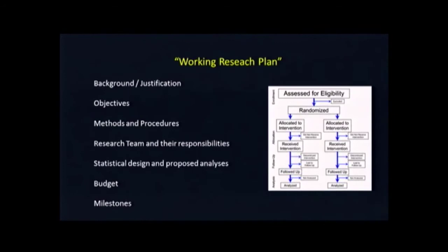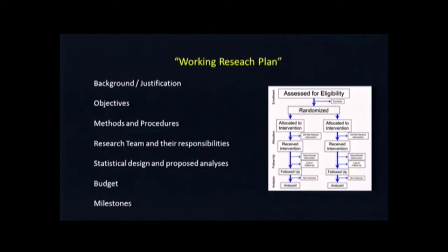You really need to have some kind of working research plan. Most people think of a research plan as just the protocol — how do we enroll somebody with the inclusion-exclusion criteria? But it's far more reaching than that. You need to think about the background and justification: why are we actually moving forward with this research project? What are our objectives? What are the methods, the procedures of enrollment and evaluation? You need to think heavily about who's the research team and what are their roles and responsibilities. This is really team-based science. You need statistical expertise to help design the methods or analytics. You have to think about a budget — research oftentimes costs more than you get out of it initially, but in terms of its impact it can be far reaching.